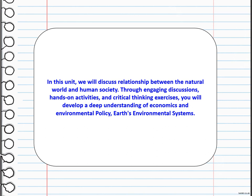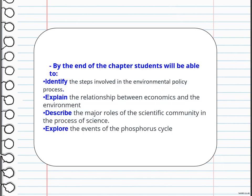Through engaging discussions, hands-on activities, and critical thinking exercises, you will develop a deep understanding of economics and environmental policy, and Earth's environmental system. By the end of the chapter, you will be able to identify the steps involved in the environmental policy process, explain the relationship between economics and environment, describe the major roles of the scientific community in the process of science, and explore the events of the phosphorous cycle.